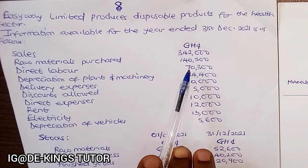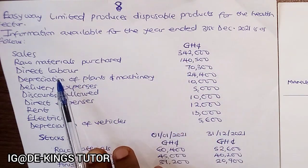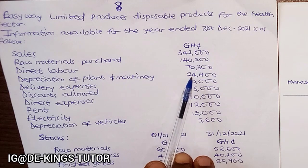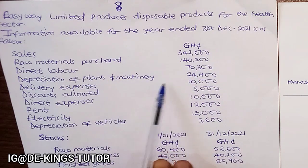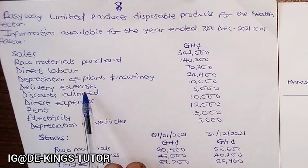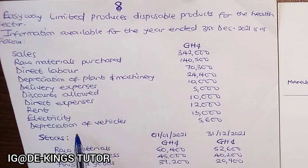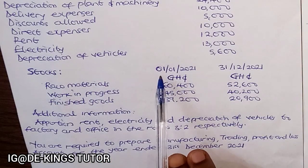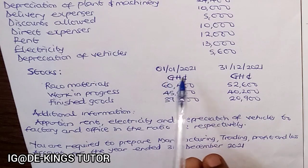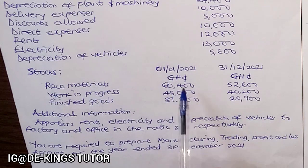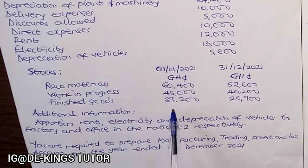Information available for the year ended 31st December 2021 is as follows: Sales is 394,000 Ghana cedis; raw materials purchased 140,500 Ghana cedis; direct labor 70,300; depreciation of plant and machinery 24,400; delivery expenses 10,000; discount 5,000; direct expenses 10,000; rent 12,000; electricity 13,000; and depreciation of vehicles 5,600.